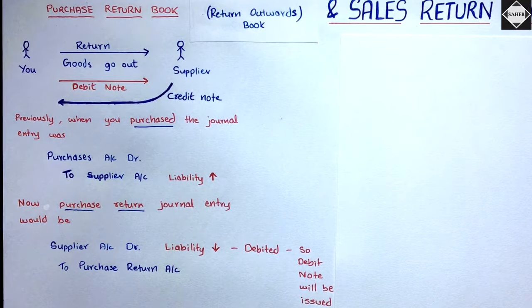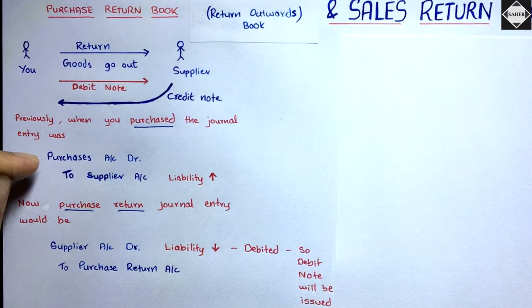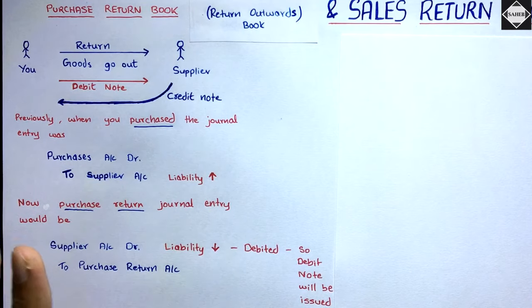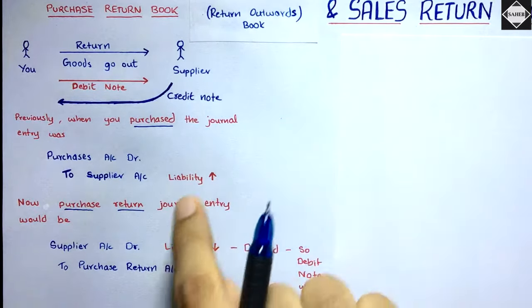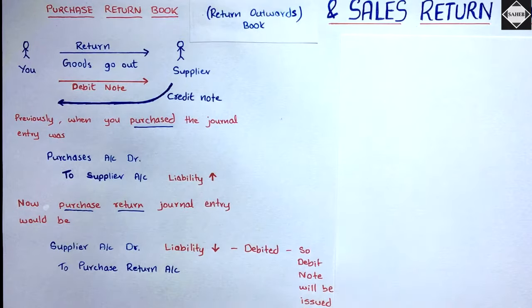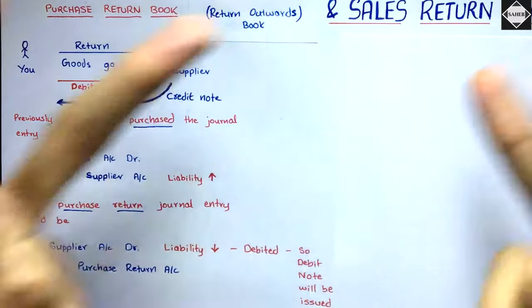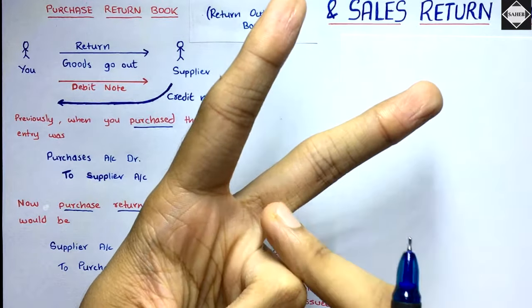In the journal entry of purchase return, two things have happened. First, you returned the goods — so purchase account has to be decreased. You purchased 10,000 worth of goods but after the return you only have 8,000 in your warehouse. Second, you had to pay 10,000 to Chandu, but since you returned 2,000 worth of goods, you only have to pay 8,000. So you have to decrease purchases and reduce the liability to Chandu.